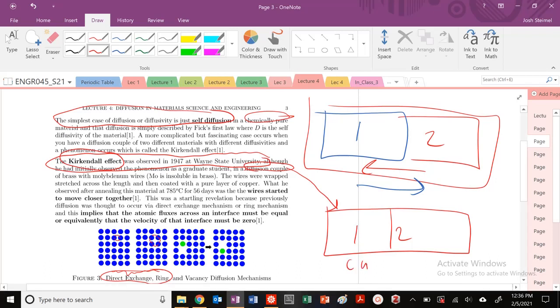So, what Kirkendall did is he basically set up a diffusion couple of copper and brass. So, really, copper on one side, zinc on the other side. And he basically placed these molybdenum wires. Why did he place molybdenum? Because they're insoluble in brass. So, he placed these molybdenum wires on the sample. And he left them. He basically put this diffusion couple in the oven, 785 degrees C, for 56 days. And what he observed was that the wires started to move closer together. So, these wires started to move along the material. So, this was shocking to people. It was a starting revelation.